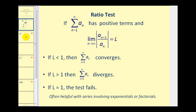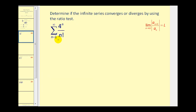Let's go ahead and see how this works. Notice how a sub n involves an exponential as well as a factorial, which gives us a hint to use the ratio test. So we're going to take the limit as n approaches infinity of the absolute value of a sub n plus one divided by a sub n.